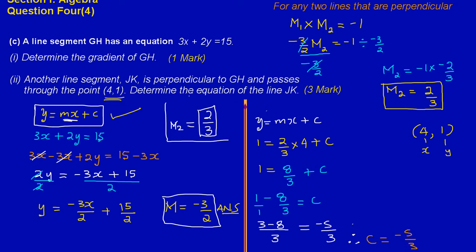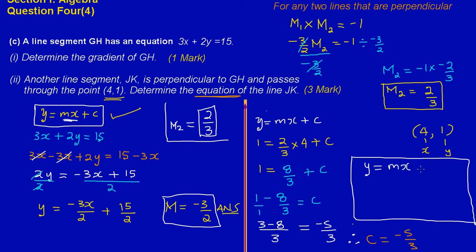They asked us to determine the equation of the line. The general form is y equals mx plus c. We found the gradient is 2 upon 3, and the y-intercept is negative 5 upon 3. So the equation of line JK is: y equals 2 upon 3 times x minus 5 upon 3. That's our answer for part 2. Feel free to leave a comment or ask a question if you're still not sure, and we'll get back to you as soon as possible. Bye-bye.